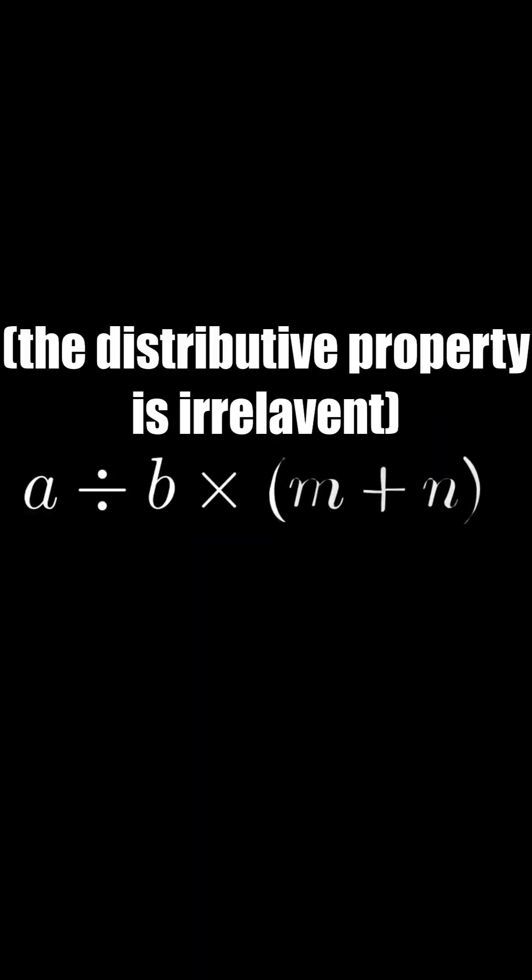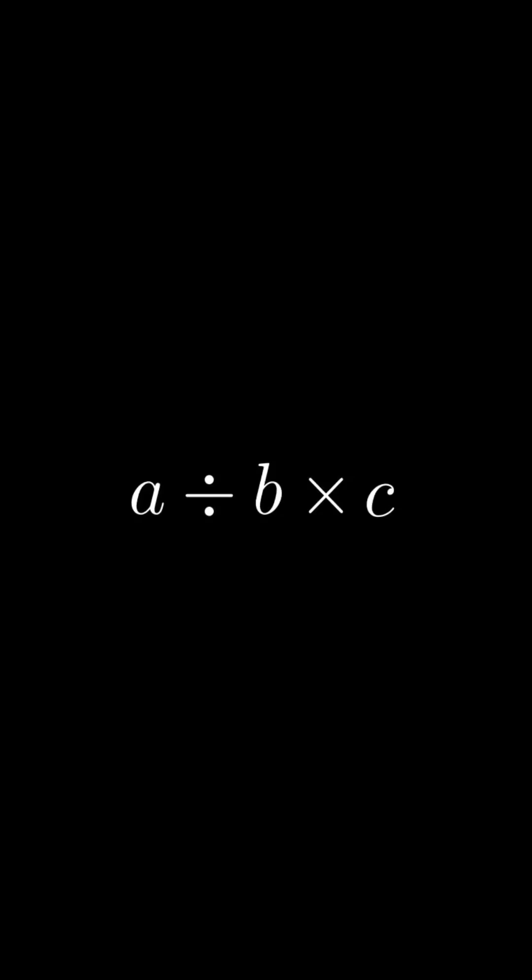The problems are always structured like this. According to PEMDAS, when you have multiplication next to division, you just go from left to right, so the final answer is A times C all over B.